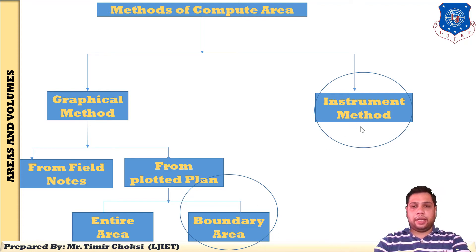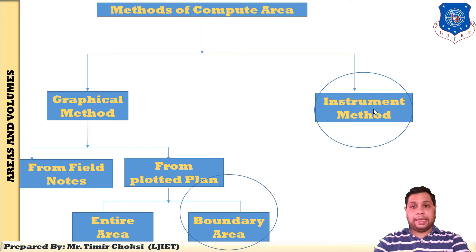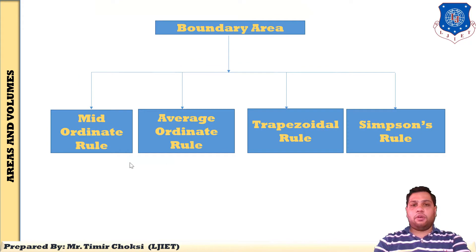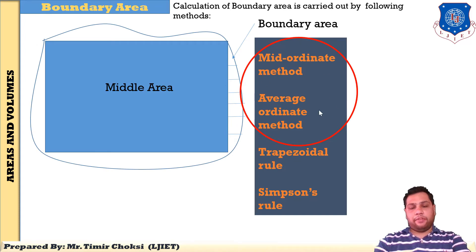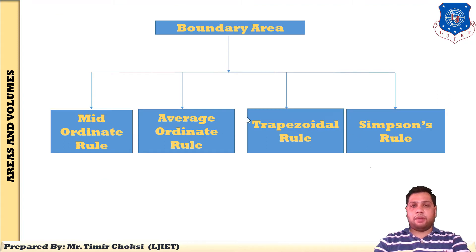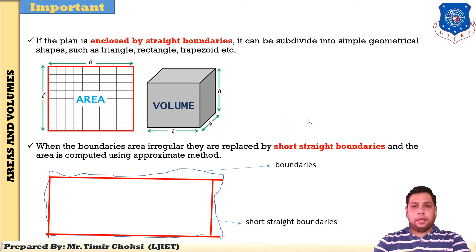In this particular session I have explained two methods of boundary area. There are four methods of boundary area: mid ordinate rule, average ordinate rule, trapezoidal rule, and Simpson's rule. In this session I have covered two methods — mid ordinate rule and average ordinate rule.